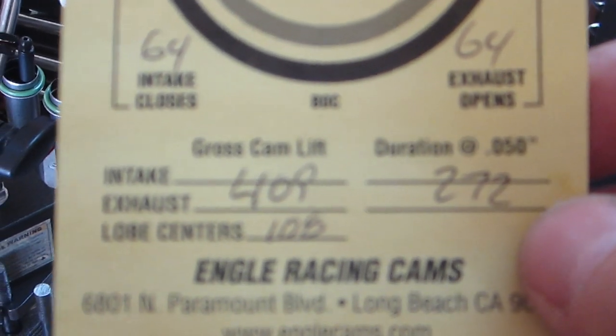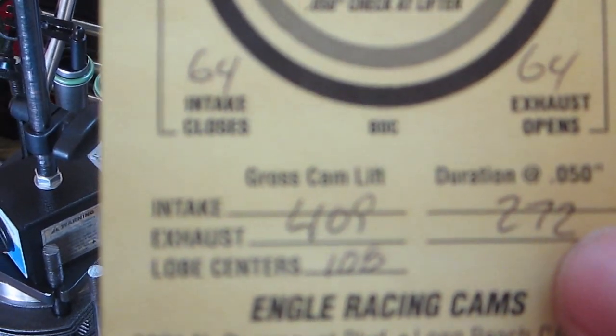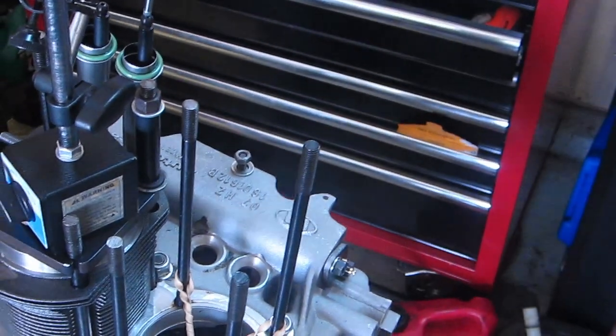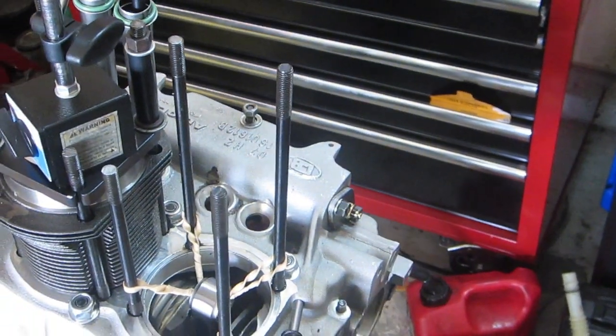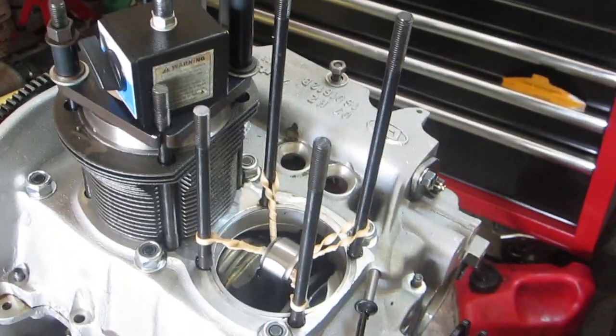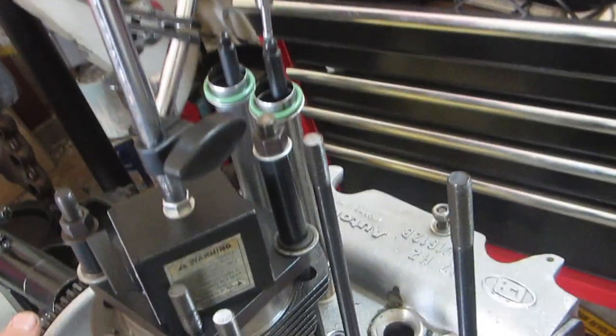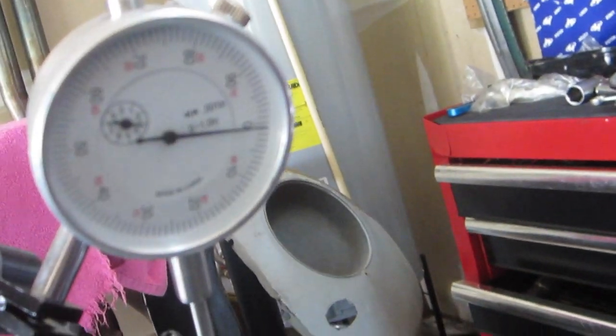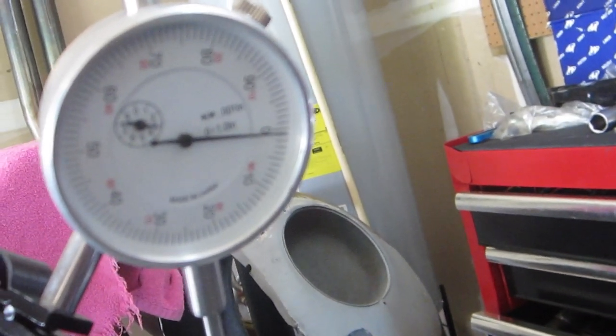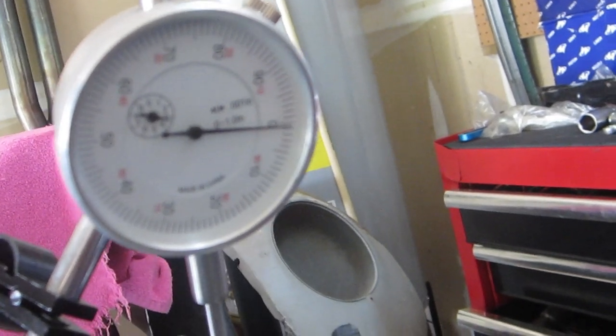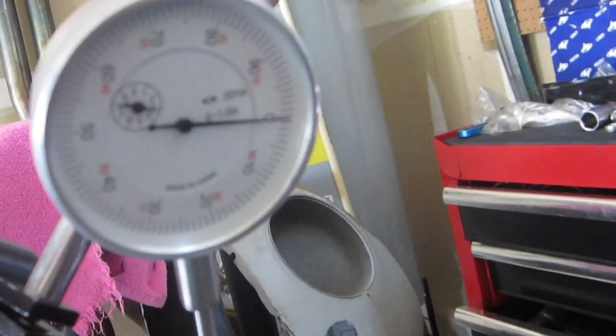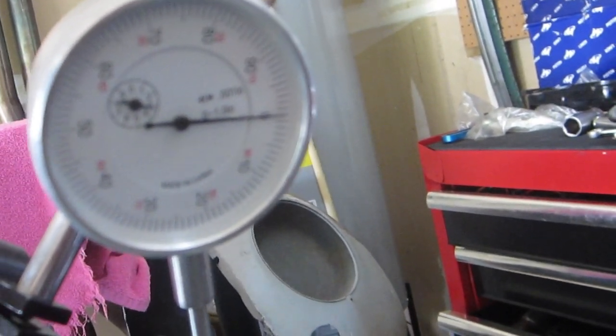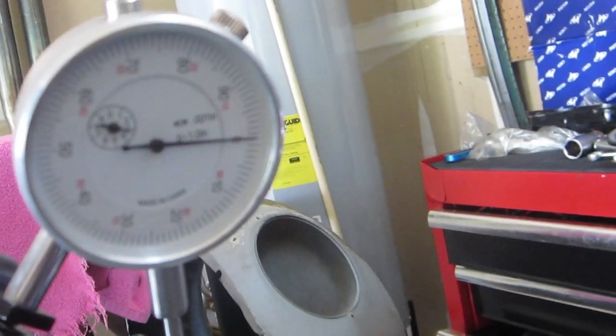So without further ado, let me start the process. The way to degree these things, at least that I'm of the understanding, is you position the engine at top dead center as we've attempted to do here, and then you rotate the engine. You zero out the dial indicator once you've got top dead center. You rotate the engine around until you see the push rod rise 0.050.